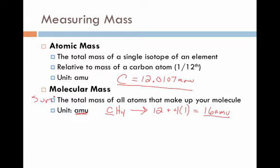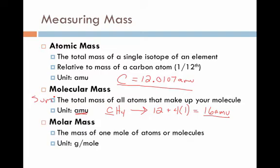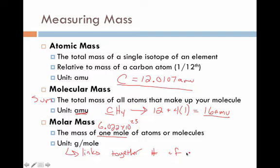Unfortunately, neither of those values are going to be very useful for us going forward. We always want to be able to relate a certain mass to a certain number of molecules. That brings us to molar mass — the mass of one mole of atoms or molecules. One mole equals 6.022 times 10 to the 23rd things. This links together a number of atoms to a mass, connecting balanced reactions to what we measure in the lab.